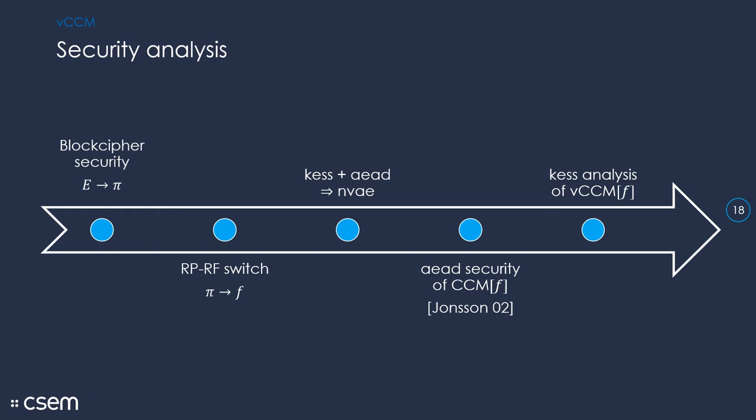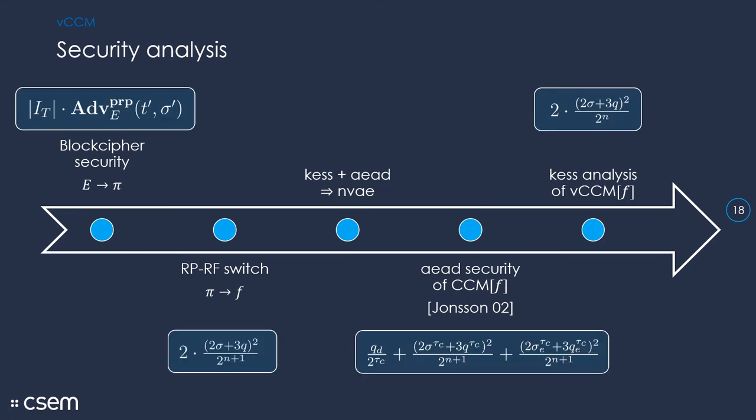It's pretty standard. We start by a replacement of the block cipher by a secret random permutation. Then we perform an RP-RF switch. We follow up with the theorem from previous work, plug in the result by Jonsson. And then we perform a case analysis of VCCM. Here we see the contribution of each of these steps to the bound. Then if we add these together, we get the bound we have seen on two slides ago.